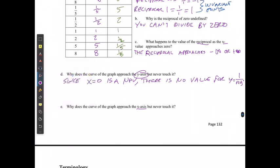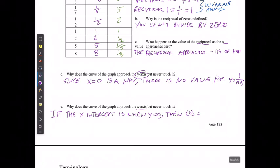And the reason why is if the x-intercept is when y equals 0, then 0 would equal 1 over x, or 0 times x would equal 1,